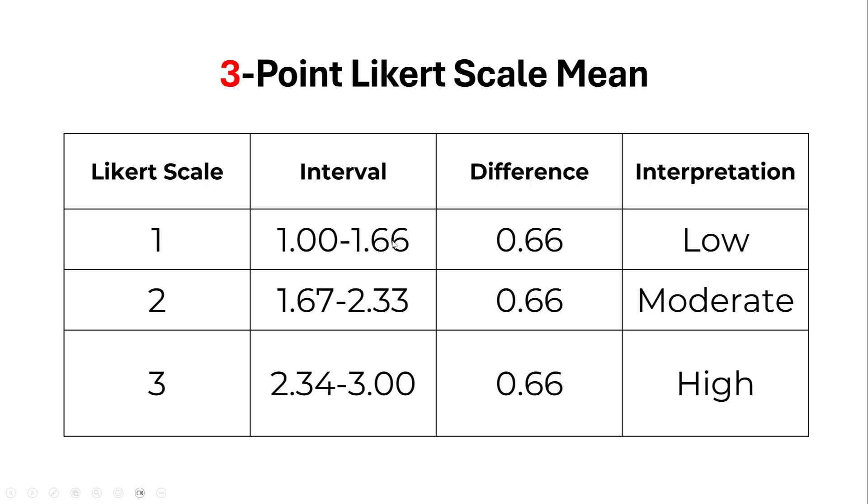This table explains the range we will get. From one to 1.66 corresponds to low. From 1.67 to 2.33 corresponds to moderate. And from 2.34 to 3 corresponds to high. You see the difference is 0.66, which is the range we explained earlier. There is no bias unlike other scales, especially five-point Likert scale or four-point Likert scale, where there could be some biases.